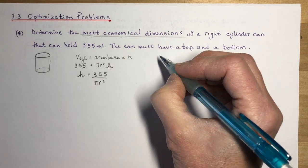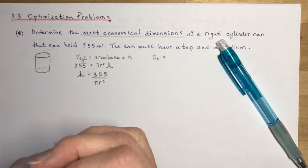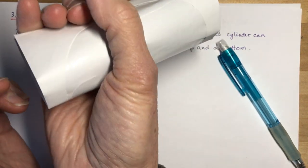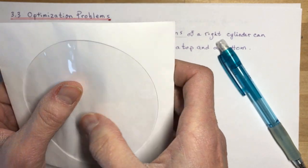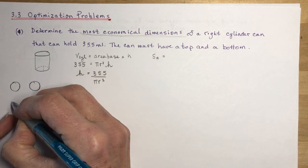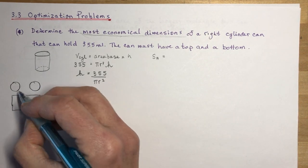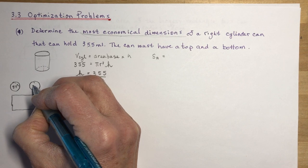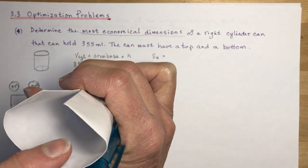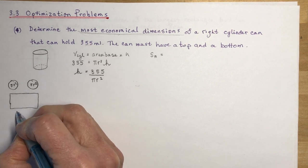Now the second part involves the surface area of a right cylinder. Picture a cylinder like a toilet paper roll — it has a circle on top, a circle on the bottom, and when you open it up, it becomes a rectangle. So the surface area has two circles and one rectangle. The area of each circle is πr². When opened up, the length of the rectangle is the circumference of the circle, which is 2πr.